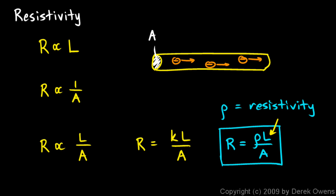Let's think about this equation again. The resistance of a wire R is equal to the resistivity times the length divided by the cross-sectional area. Now let's think about the units.